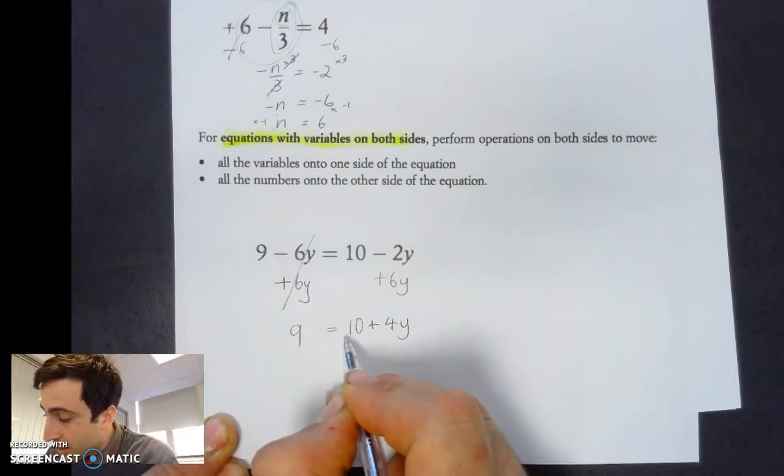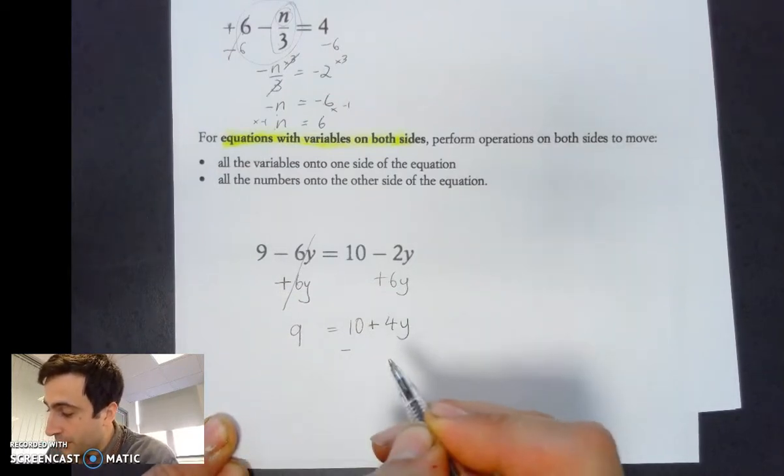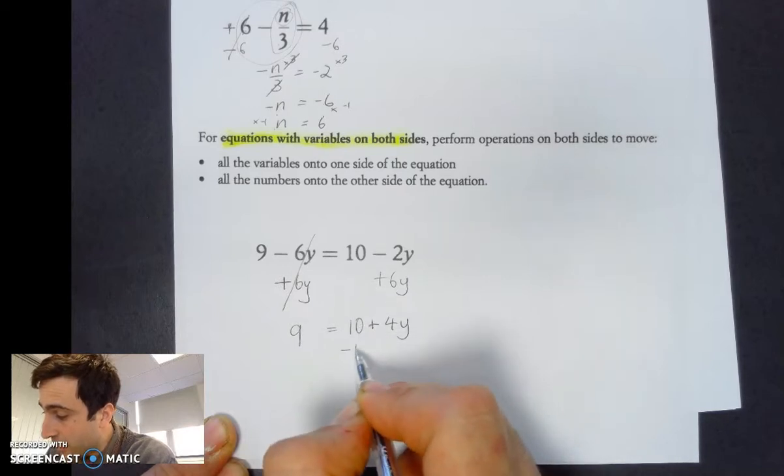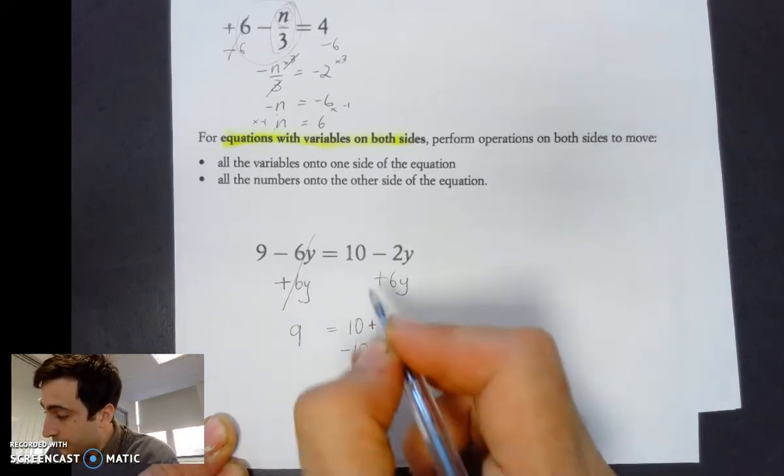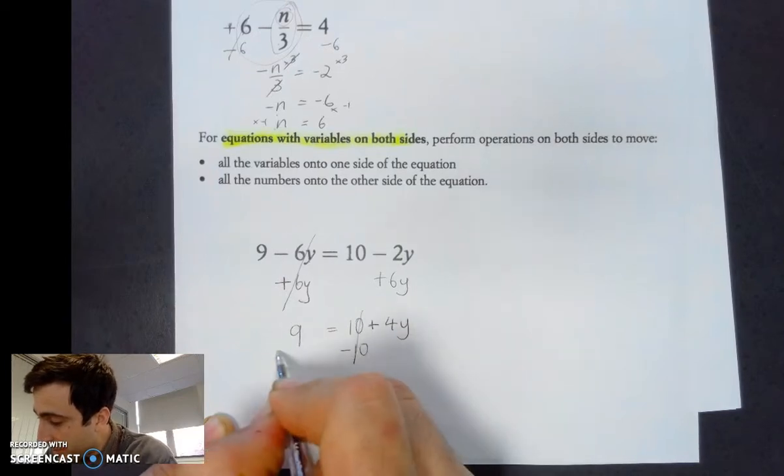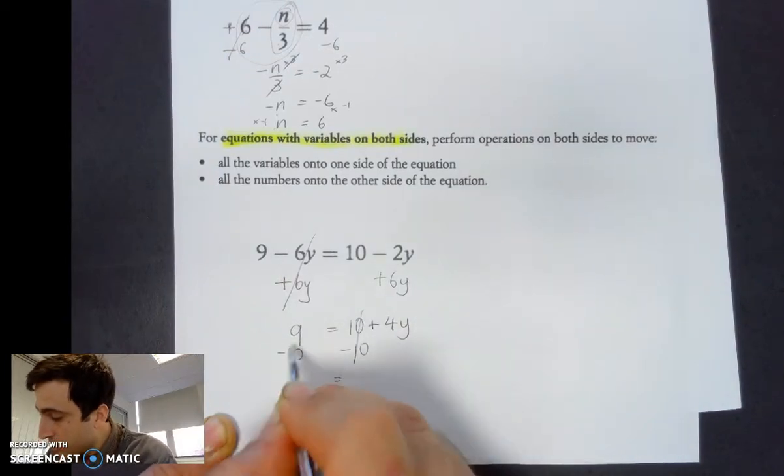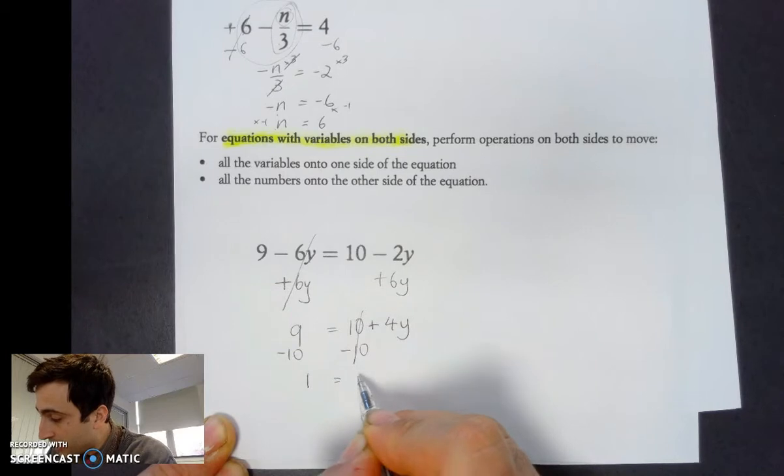Same case here. If I take away 10 from here, 10 minus 10 cancels out. I take away 10 from this side. 9 minus 10 equals negative 1. And then we're still left with 4y.